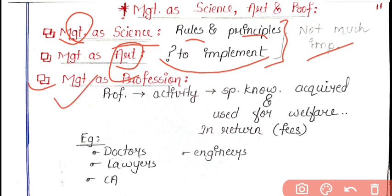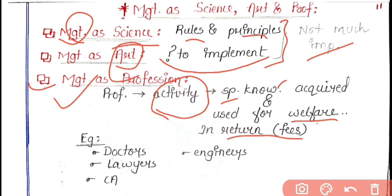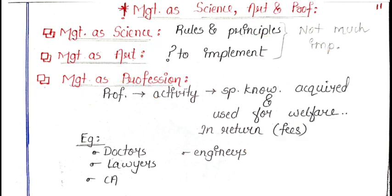The heading 'management as a profession' can be individually asked for two or three marks, so pay attention to it. Profession means an activity in which you require special knowledge, which is used for the welfare of others, and in return you get fees. Management is such work where you need specialized knowledge, you use it to help others, and in return you receive fees. Examples of professionals are doctors, lawyers, CAs, and engineers — they use their knowledge to give services and receive fees.